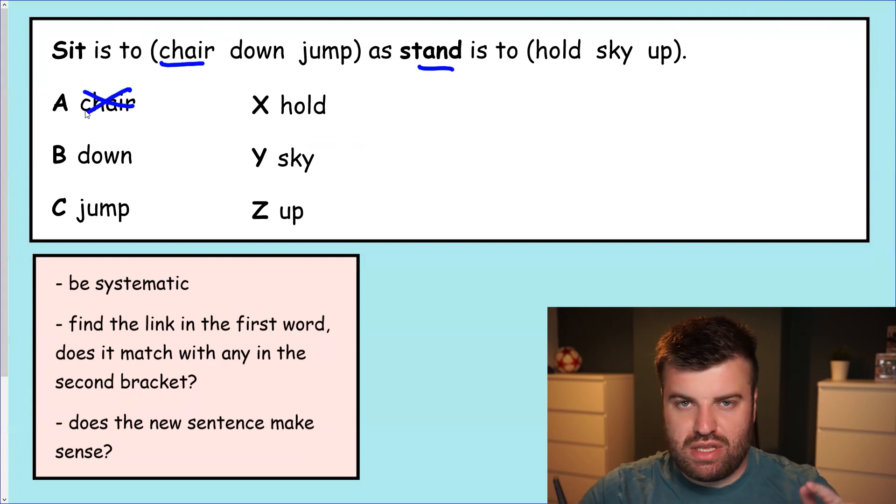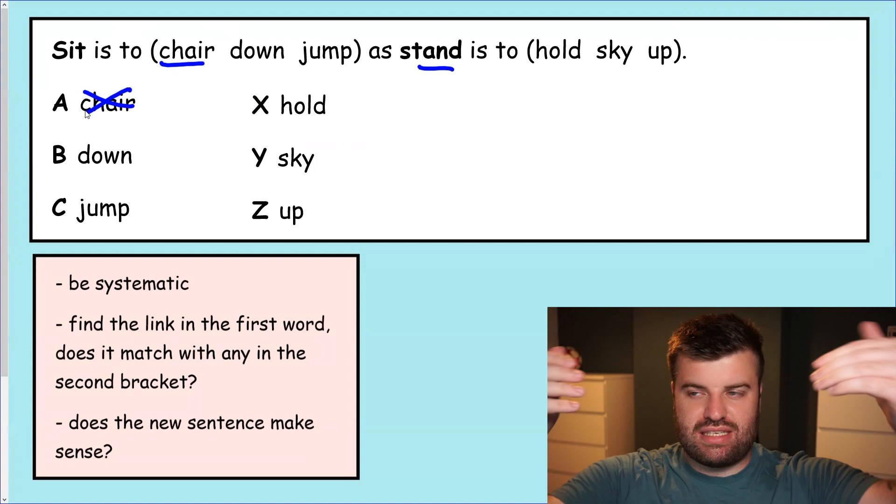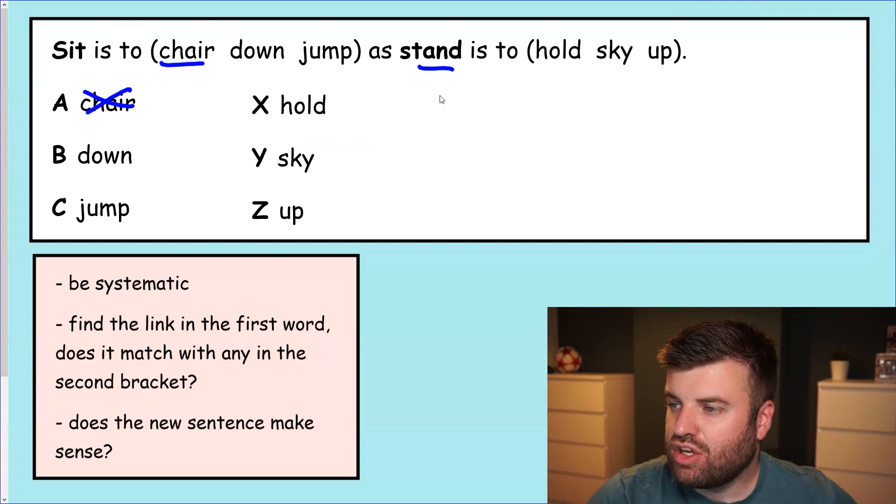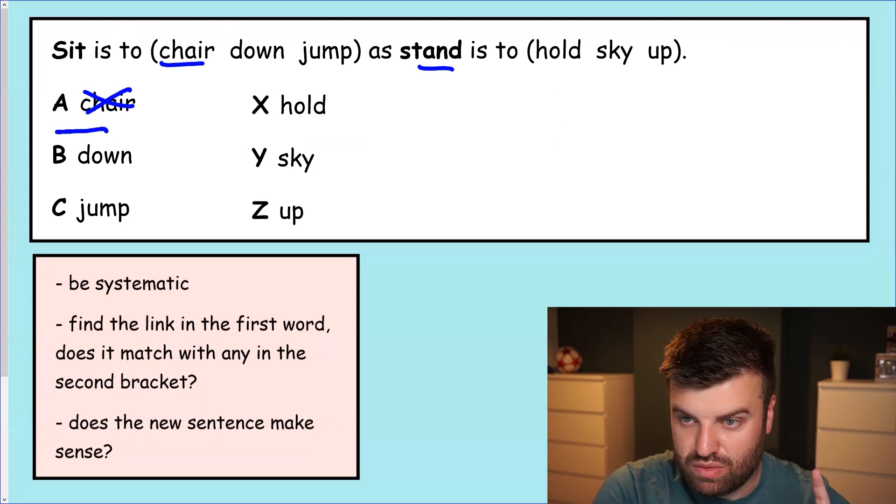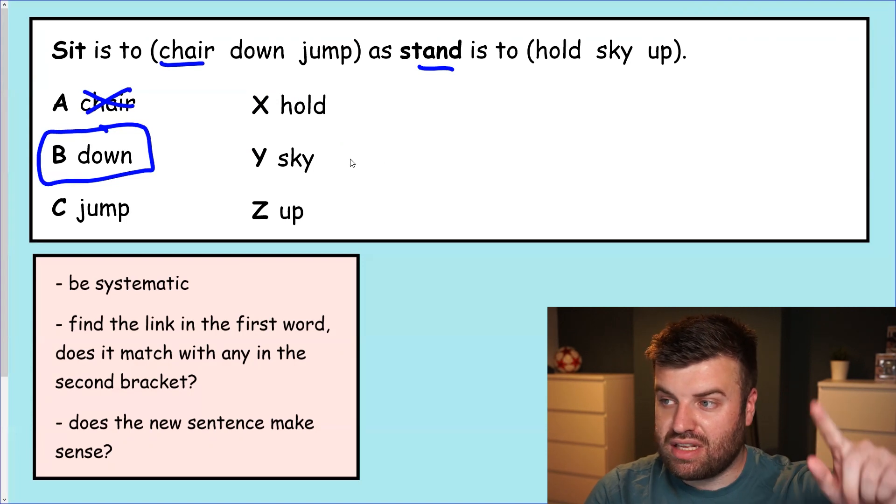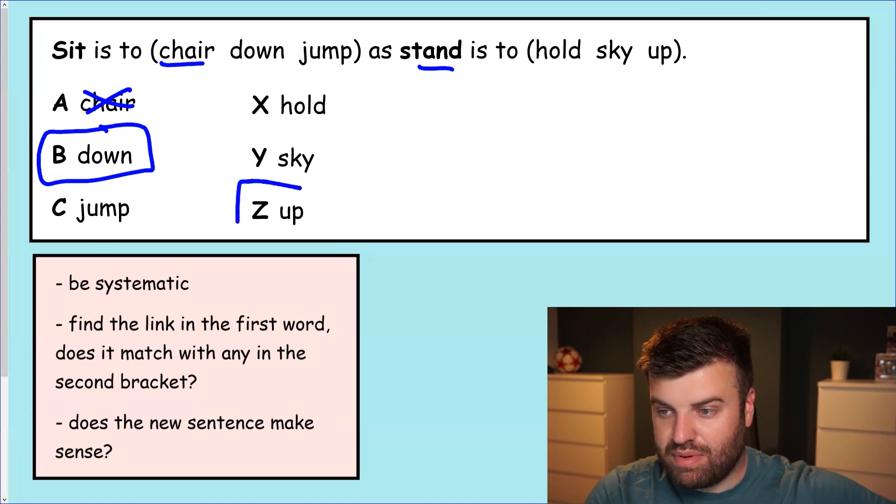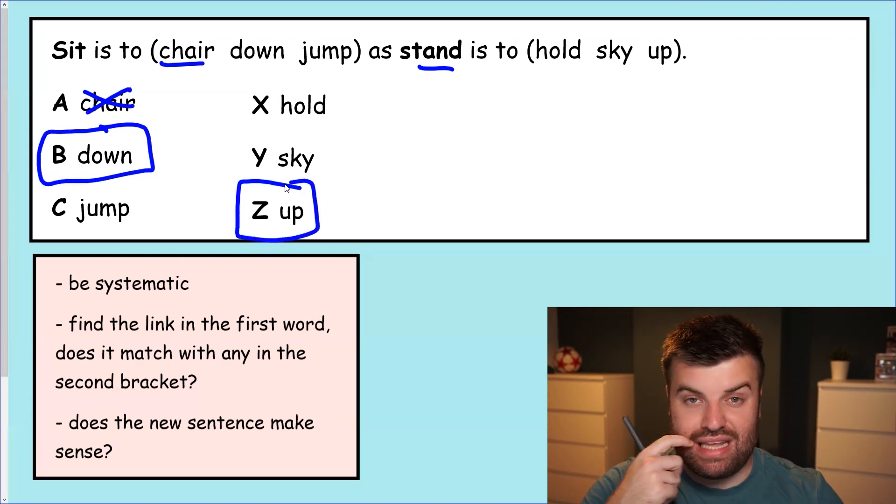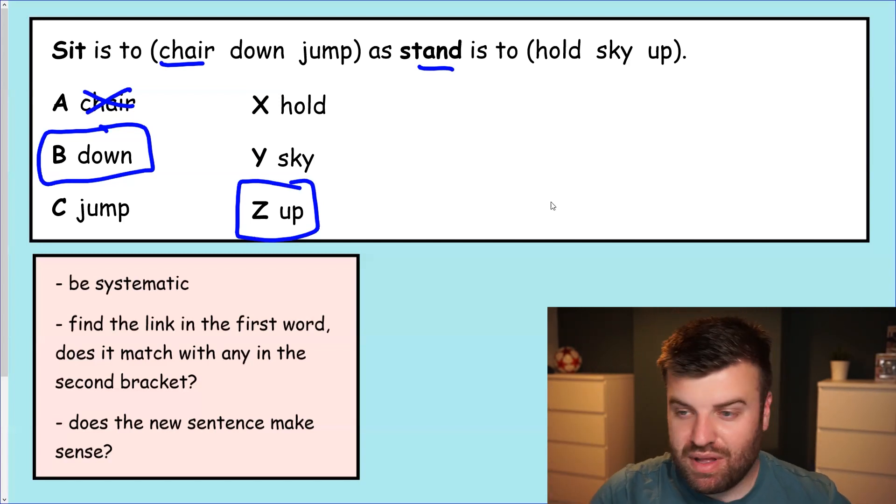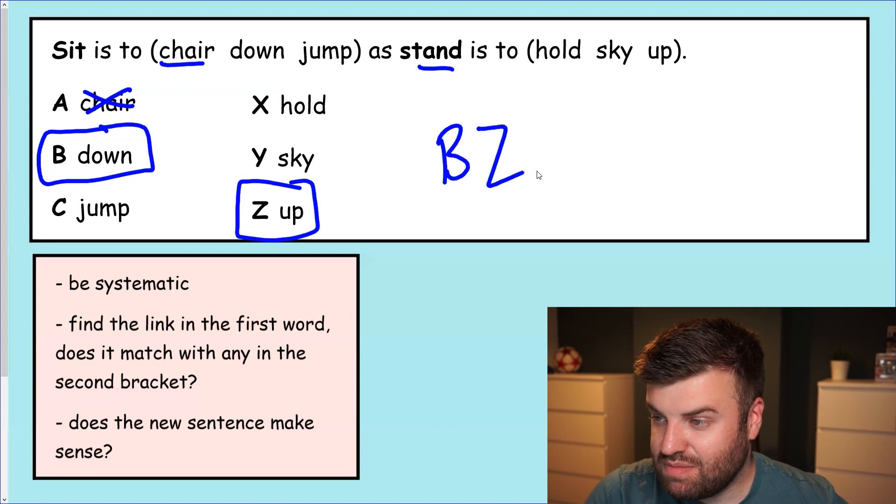Down. Sit is to down. Well when you sit you move down. Your body sits down. Sit down. Okay, let's see if anything works on the right hand side. You stand hold. No. You stand sky. Nonsense. And you stand up. Aha. Yes you do. If you sit is to down, you sit down, just like stand is to up, you stand up. These two go together in the same way. It's the direction you go when you do it. When you sit you go down. When you stand you go up. The answer to this question is B and Z.